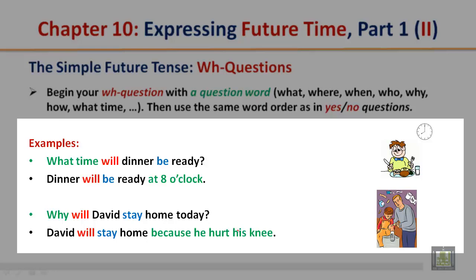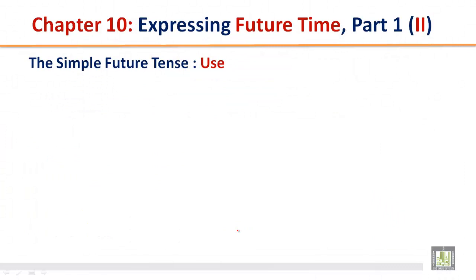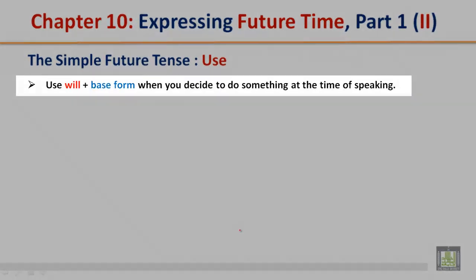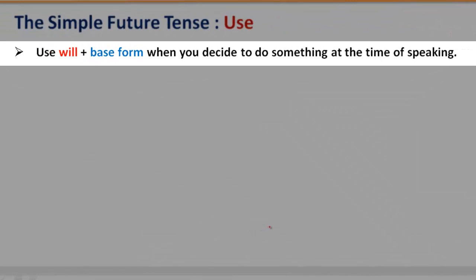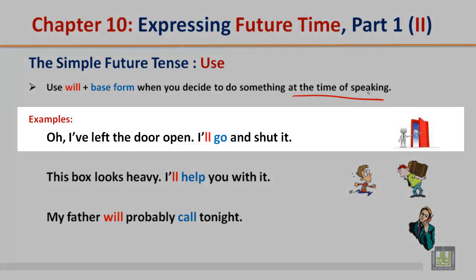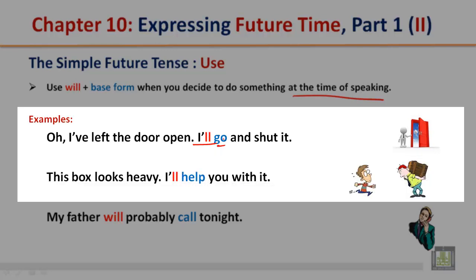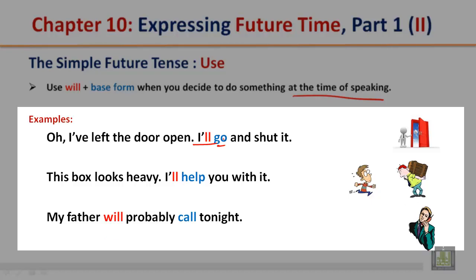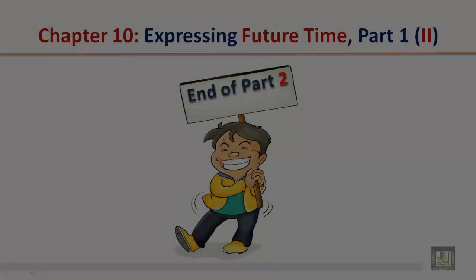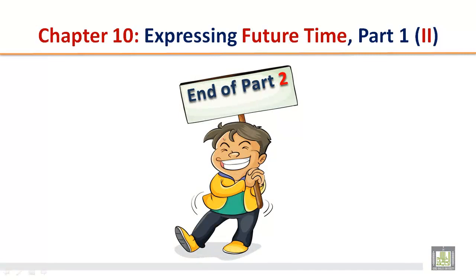Why will David stay home today? David will stay home because he hurt his knee. The simple future tense: use will plus the base form when you decide to do something at the time of speaking. Examples: Oh, I've left the door open — I'll go and shut it. Please note: 'I'll' is a contraction of 'I will'; 'go' is the base form. This box looks heavy — I'll help you with it. My father will probably call tonight. End of Part 1, PowerPoint 2.